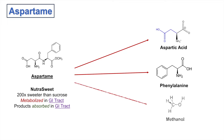Another product of aspartame metabolism is methanol. Methanol is actually a toxic compound that we normally don't want to ingest, but it is in fact a product of aspartame metabolism. It's present in small amounts, but it is important to recognize that it is also a product of aspartame metabolism.